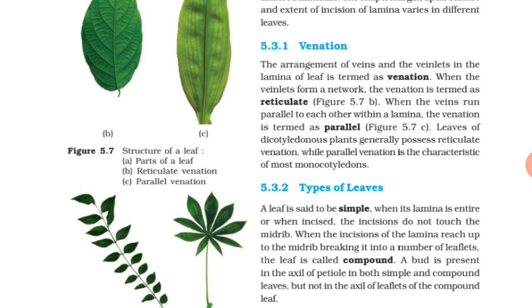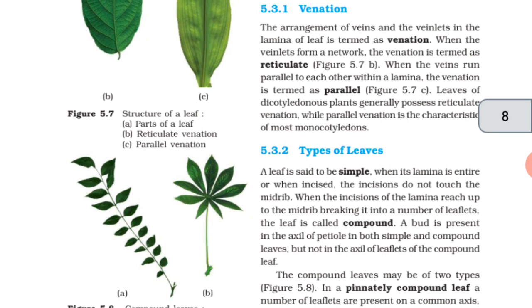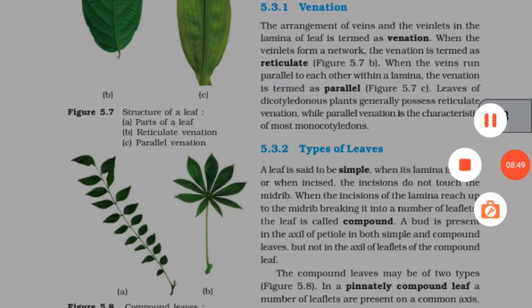Types of leaves. A leaf is said to be simple when its lamina is entire or when incised, the incisions do not touch the midrib. When the incision of the lamina reaches the midrib breaking it into a number of leaflets, the leaf is called compound. A bud is present in the axil of petiole in both simple and compound leaves, but not in the axil of leaflets of the compound leaf.